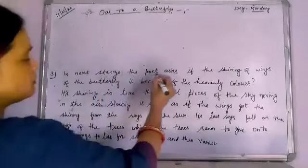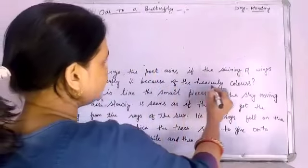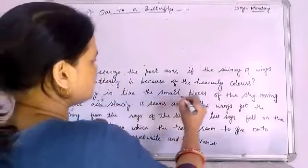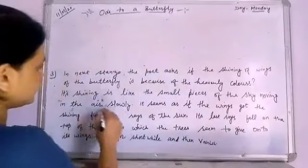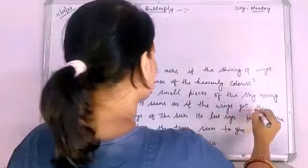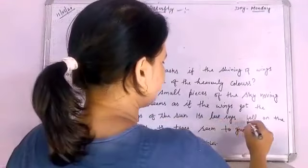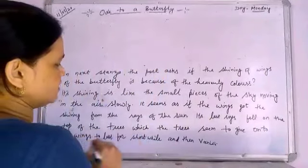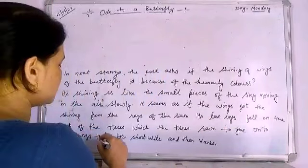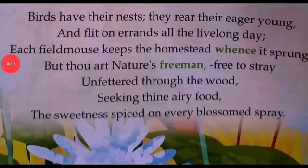In the next stanza, the poet asks if the shining of the wings of the butterfly is because of the heavenly colors. Its shining is like small pieces of the sky moving in the air slowly. It seems as if the wings got their shining from the rays of the sun. Its last rays fell on the top of the trees, which the trees seem to give on to its wings, to last for a short while and then vanish.